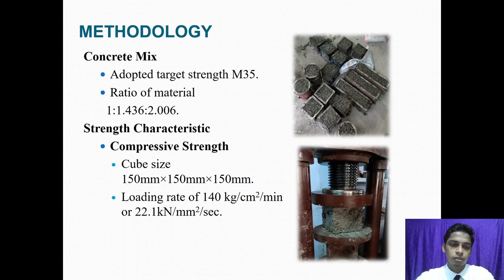Strength characteristics. Compressive strength. To determine compressive strength, we conduct destructive test using 150 mm cubes as per IS code recommendation with a loading rate of 140 kg per cm² per minute or 22.1 kN per m² per second. Load applied till the crack develops.